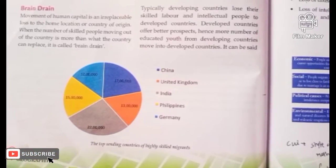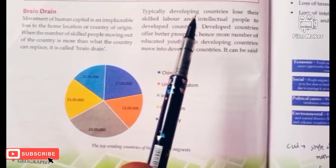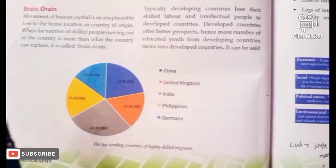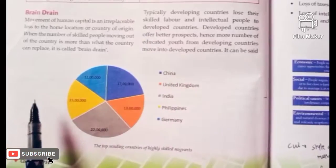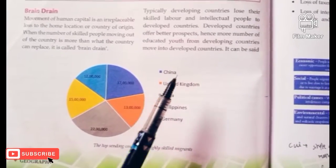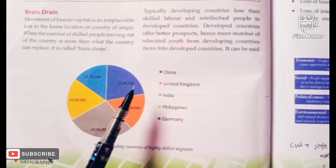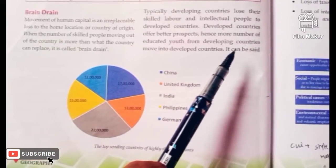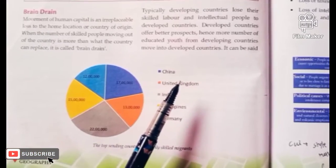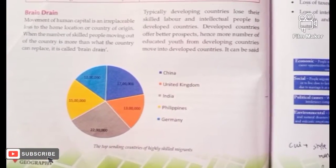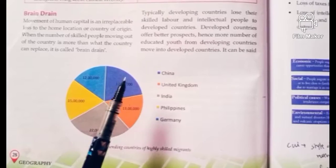In the majority of cases, developing countries start losing their skilled and very talented workers, who migrate to developed countries. Developed countries offer better prospects of life, better education facilities, better jobs and salaries, and a very good lifestyle. That is why the majority of people move to the developed countries. People from developing countries moving to developed countries — these highly skilled people — this is what we call brain drain.